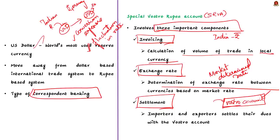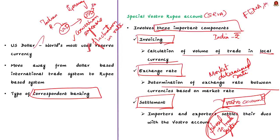This trade mechanism has done away with the dollar-based international trade system. All reporting of cross-border transactions must be done in accordance with guidelines under the Foreign Exchange Management Act (FEMA) 1999. Indian banks holding Vostro accounts of foreign banks also need to comply with FATF standards, and they are allowed to open multiple Special Vostro Rupee accounts for different banks from the same country.